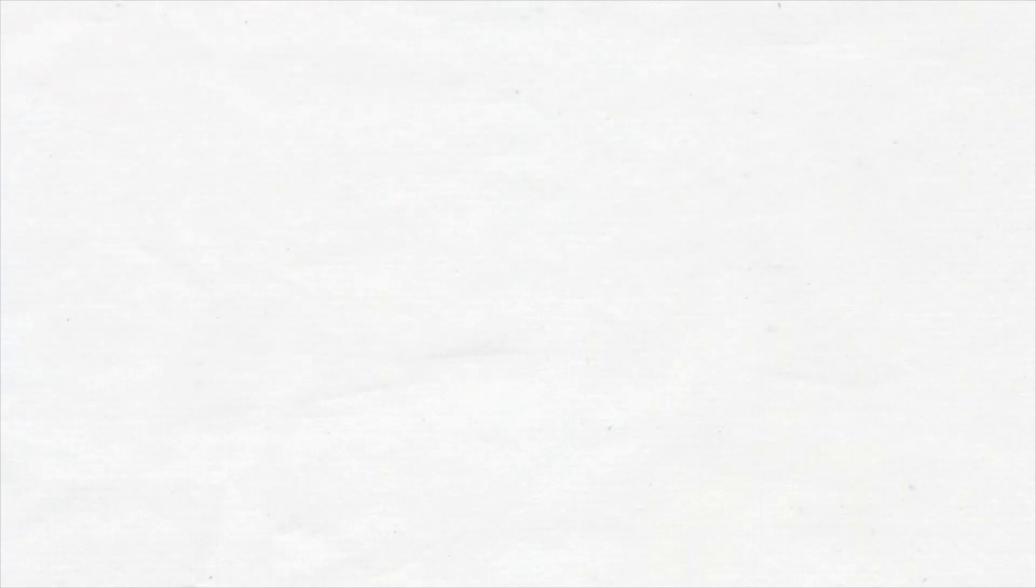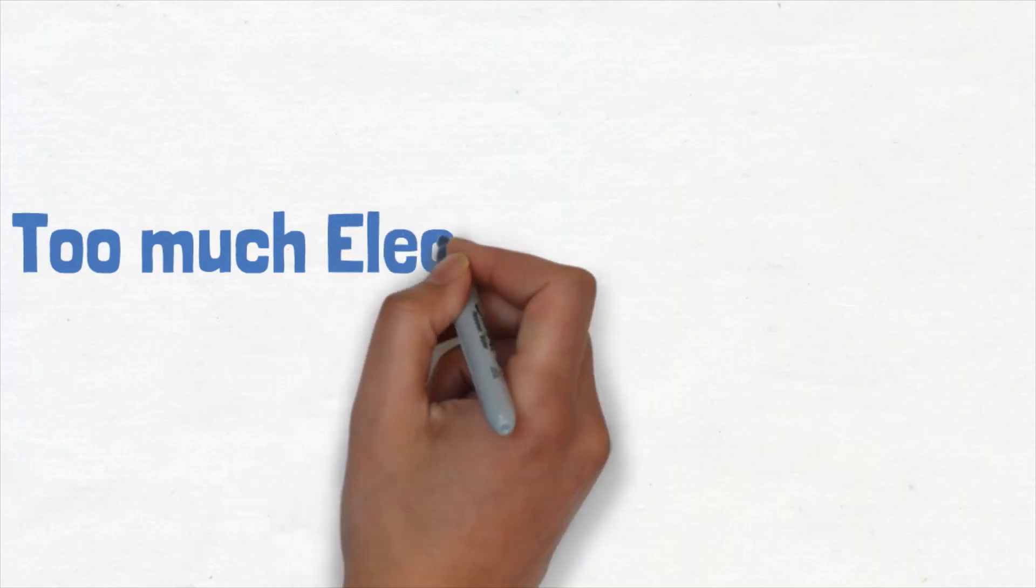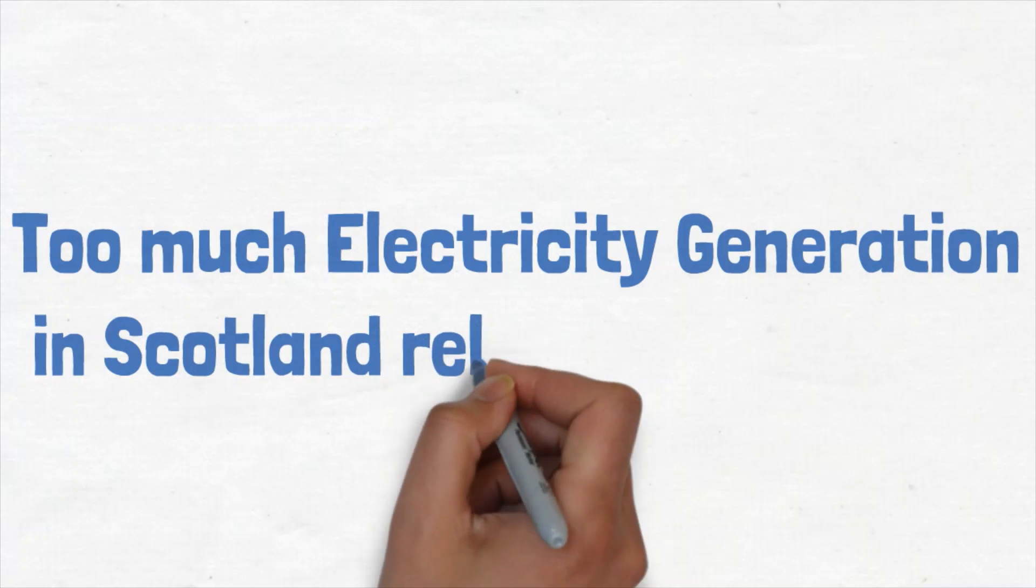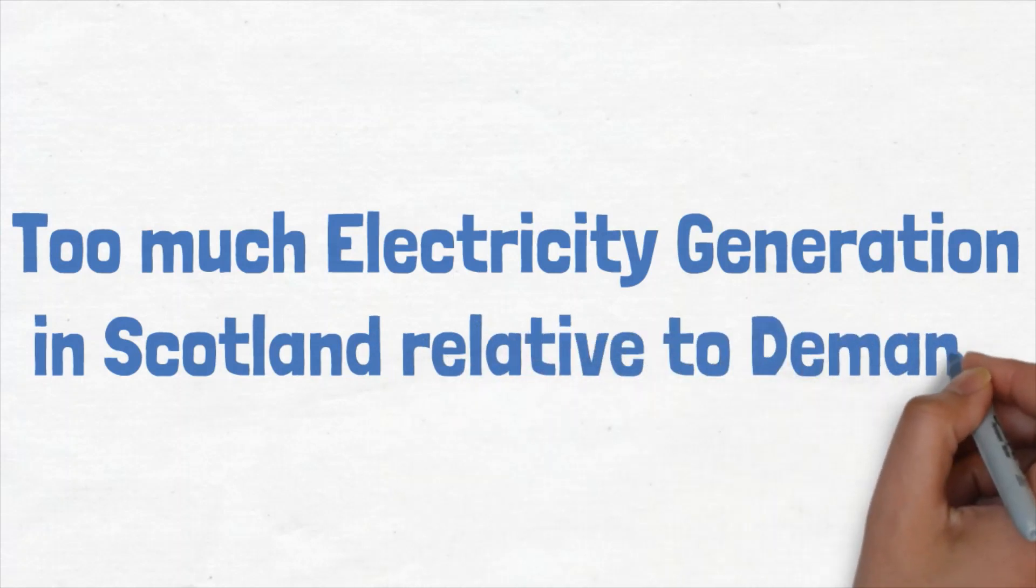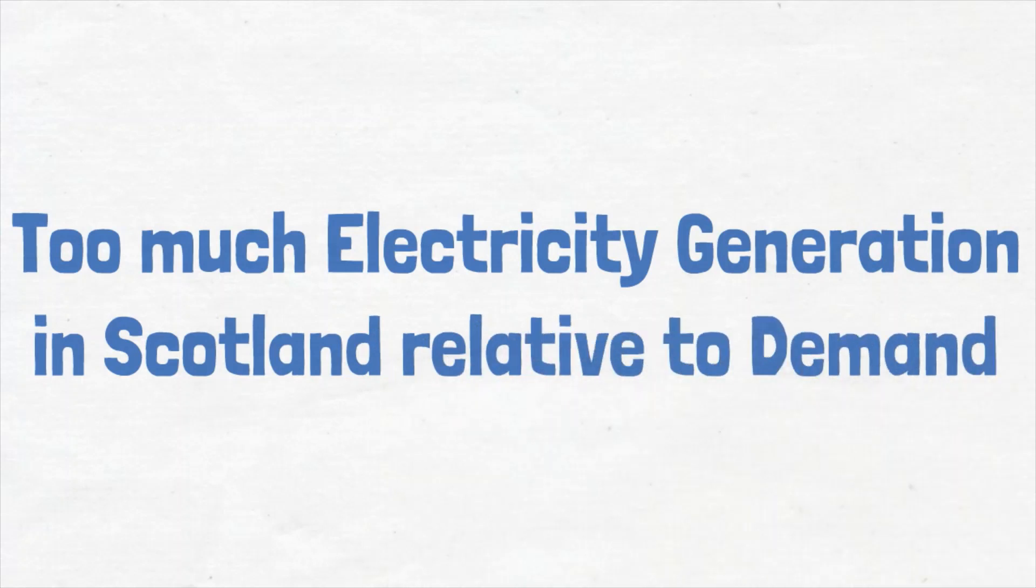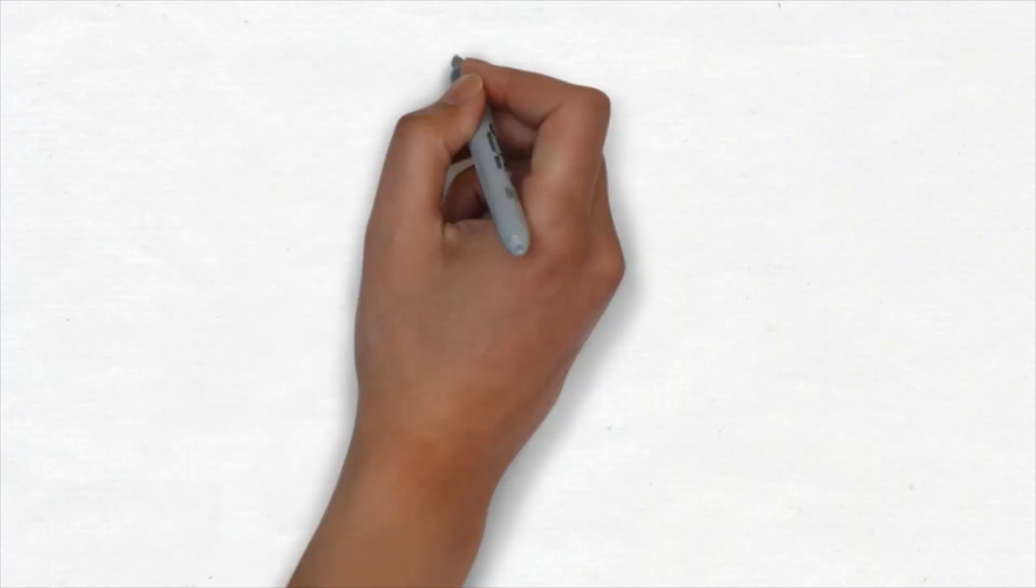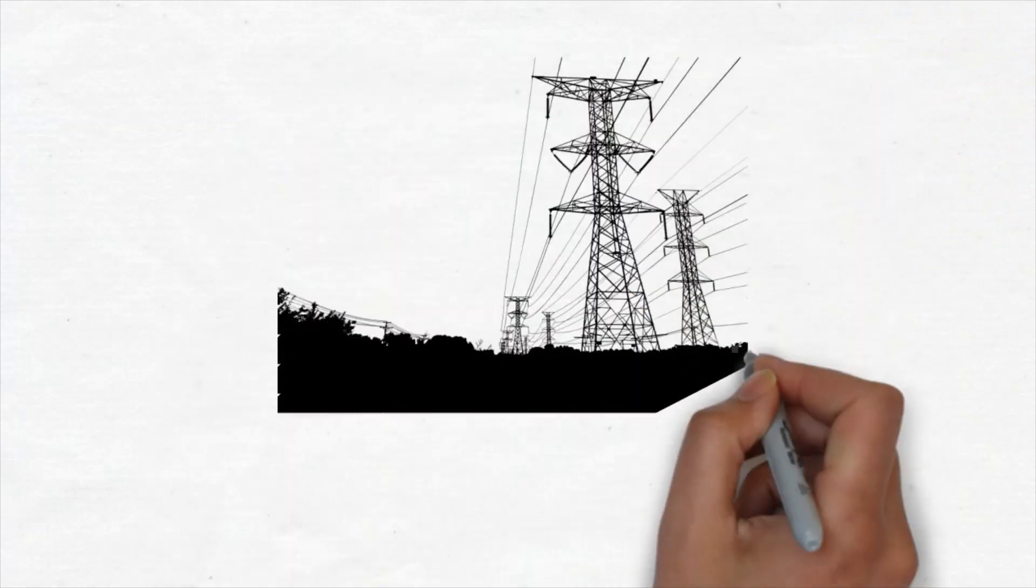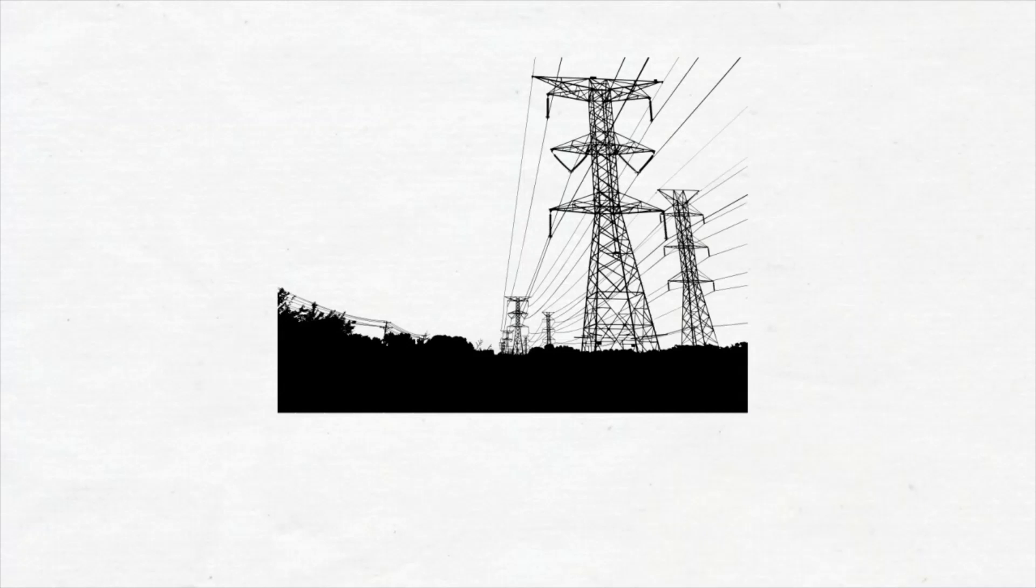Why does this happen? Essentially, there is too much generation in Scotland relative to demand. When this excess generation tries to move south of the border, there is effectively a bottleneck where the network infrastructure cannot transport all of the electricity.